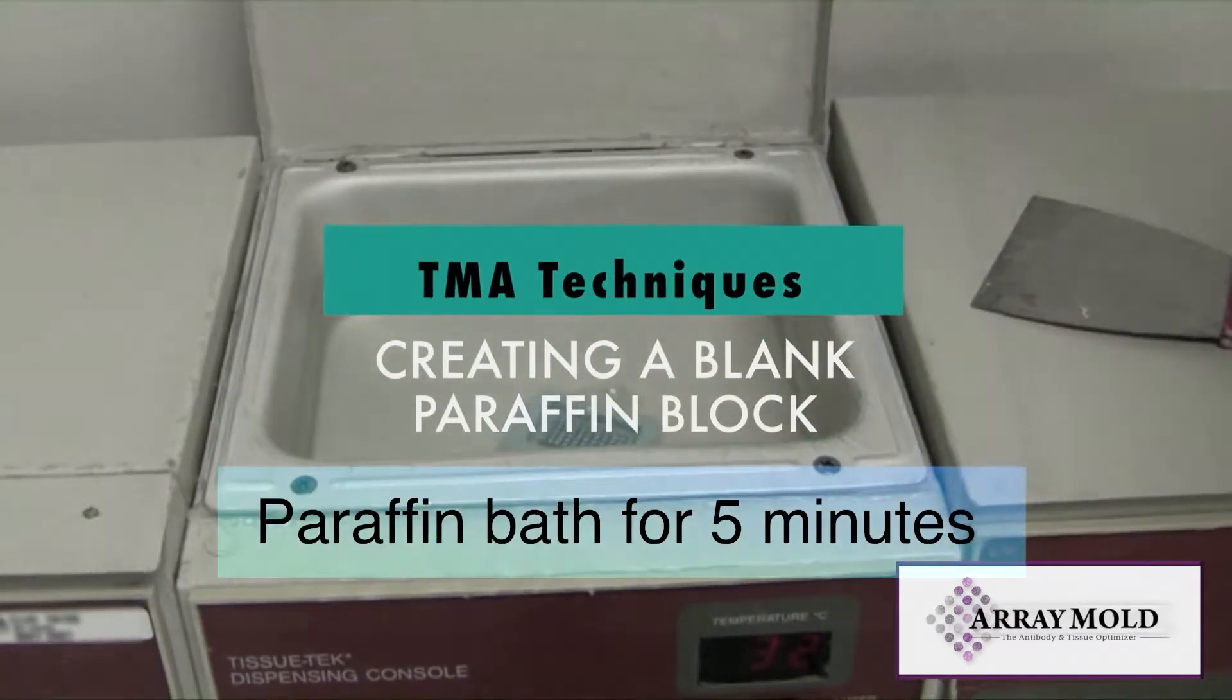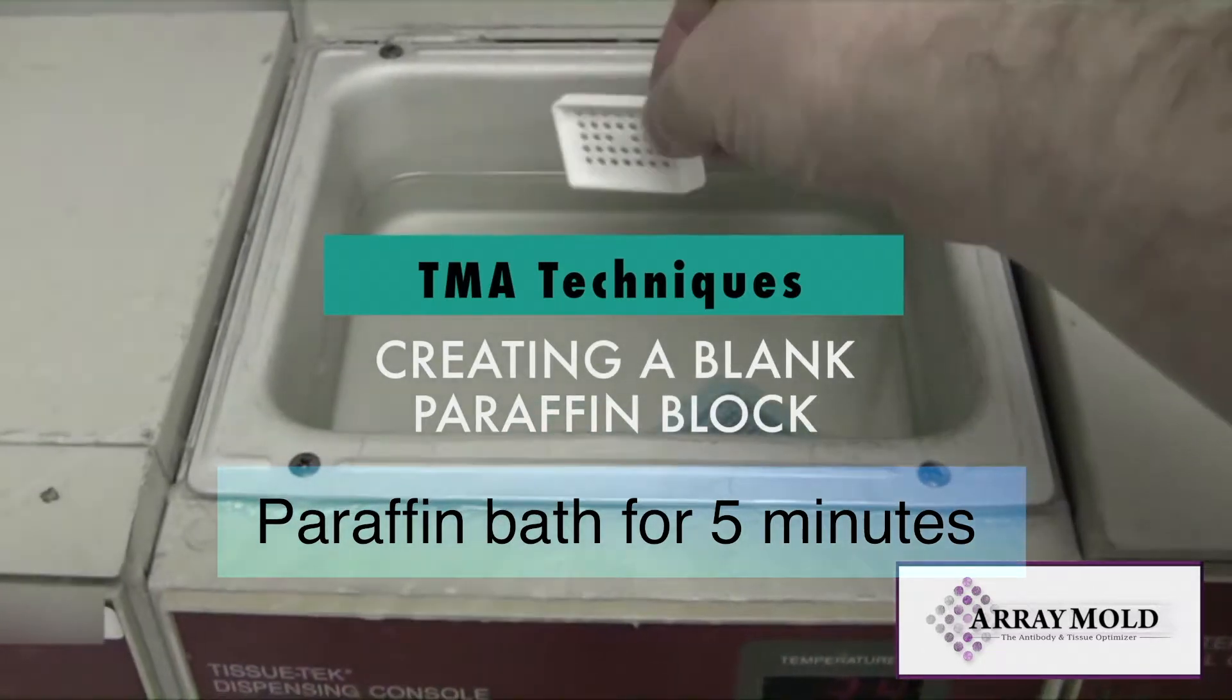Once your array mold is warmed up in a paraffin bath, place it on an ice plate or an ice tray and add the cassette.